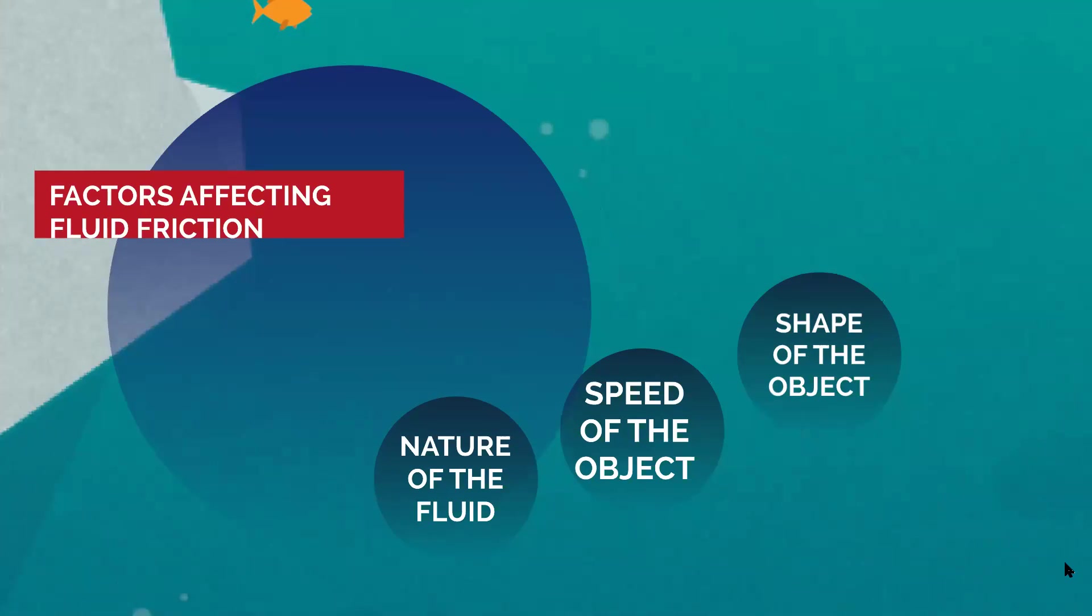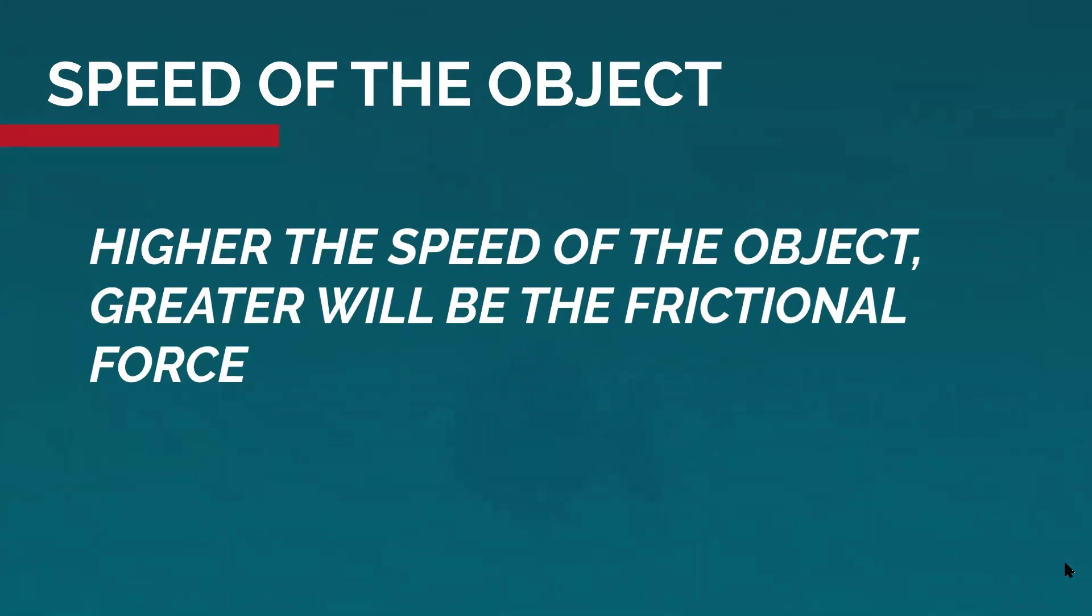The second one is the speed of the object. Higher the speed of the object, greater will be the frictional force. You might be experiencing this when you normally walk. You don't feel the pressure of air, right? But when you run very fast in the same atmosphere, in the same level, you will feel the force exerted by air against you. So as the speed increases, you will be facing more friction offered by any fluid. So that is the second factor on which fluid friction depends.